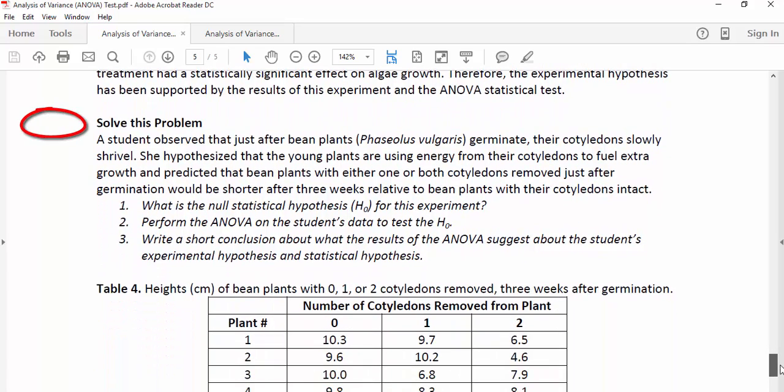So here's the problem. A student observed that just after bean plants germinate, their cotyledons slowly shrivel. A cotyledon is a leaf that is produced by a plant when it first germinates. Bean plants produce two cotyledons. She hypothesized that the young plants are using energy from their cotyledons to fuel extra growth, and predicted that bean plants with either one or both cotyledons removed just after germination would be shorter after three weeks relative to bean plants with their cotyledons intact.